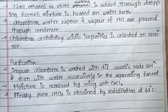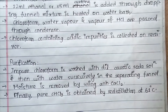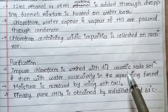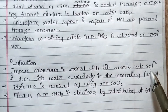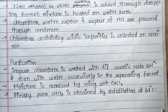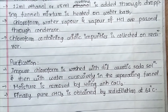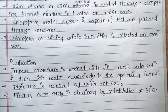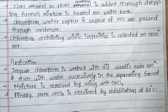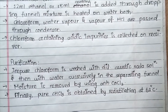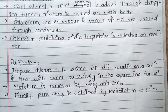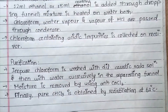For purification, crude chloroform is washed with dilute caustic soda solution to remove acidic impurities. It is then washed with water using a separating funnel to remove moisture. Anhydrous calcium chloride is used to dry it. Finally, pure CHCl3 is obtained by re-distillation at 61 degrees Celsius.